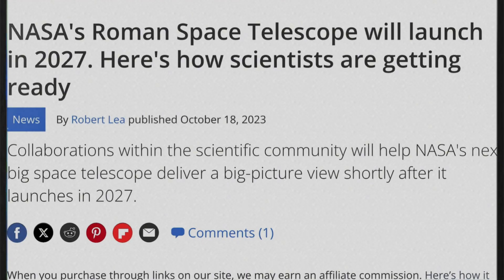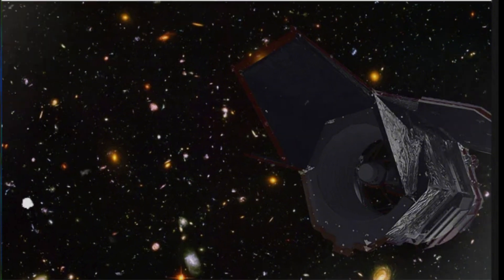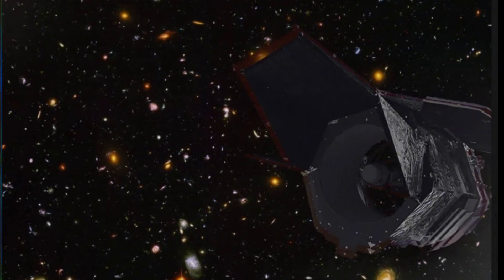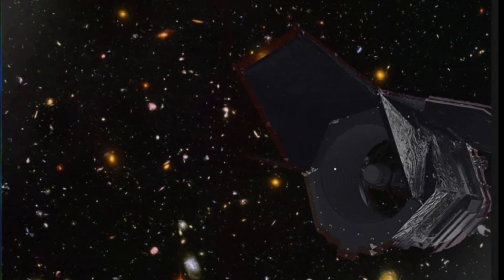In the coming decade, the Nancy Grace Roman Space Telescope, set to launch in early 2027, will help by offering over 100 times the field of view of JWST, making it easier to find similar early universe galaxy clusters.